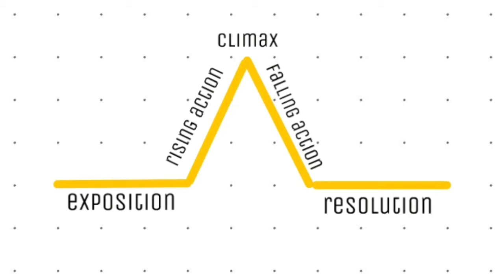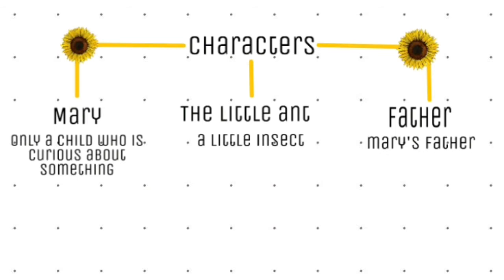Now, let's take a look at the characters. The first character is Mary. She is a child who is curious about something. In my opinion, she is a protagonist. Why protagonist? Because it's too much to call her an antagonist — she is just a child curious about what happens if the ant is under the thimble.